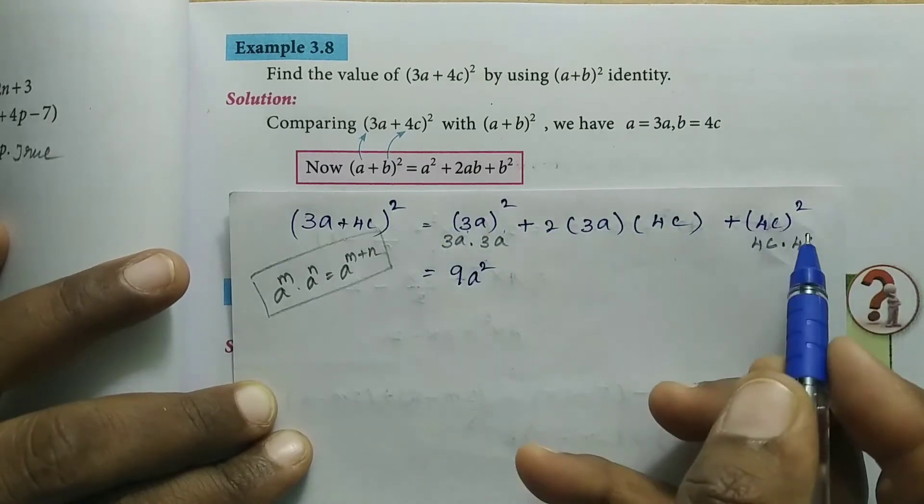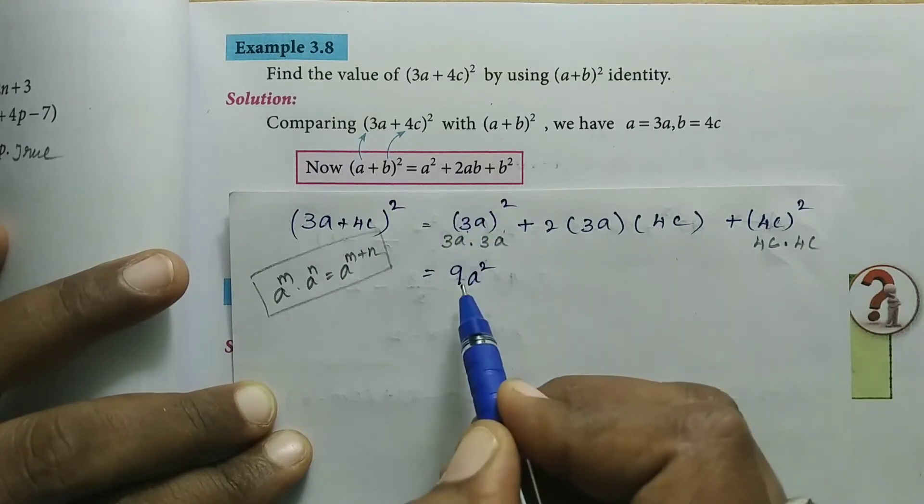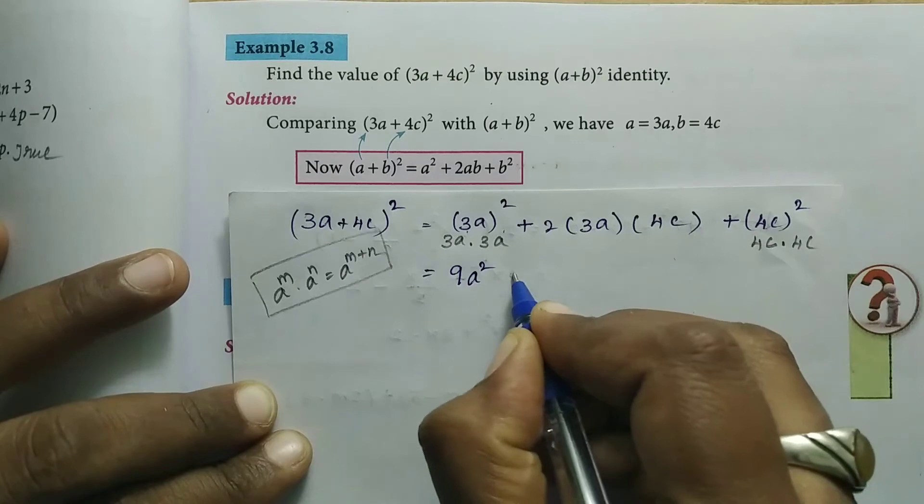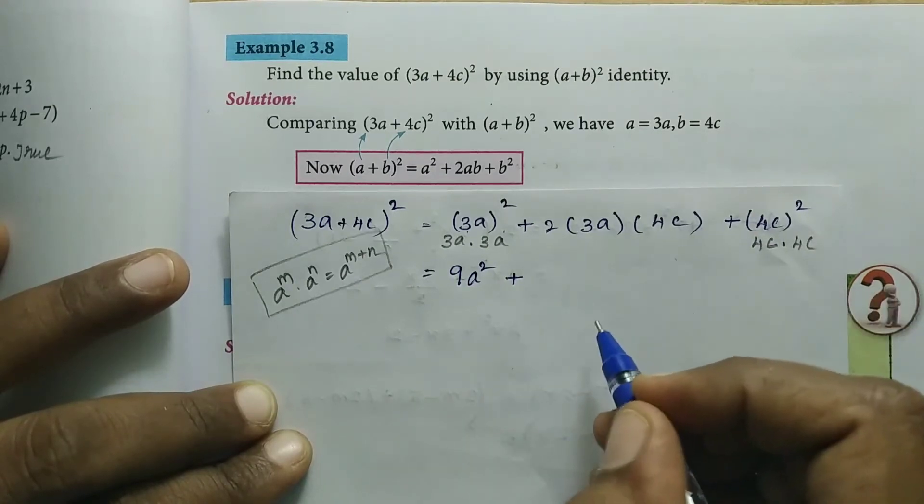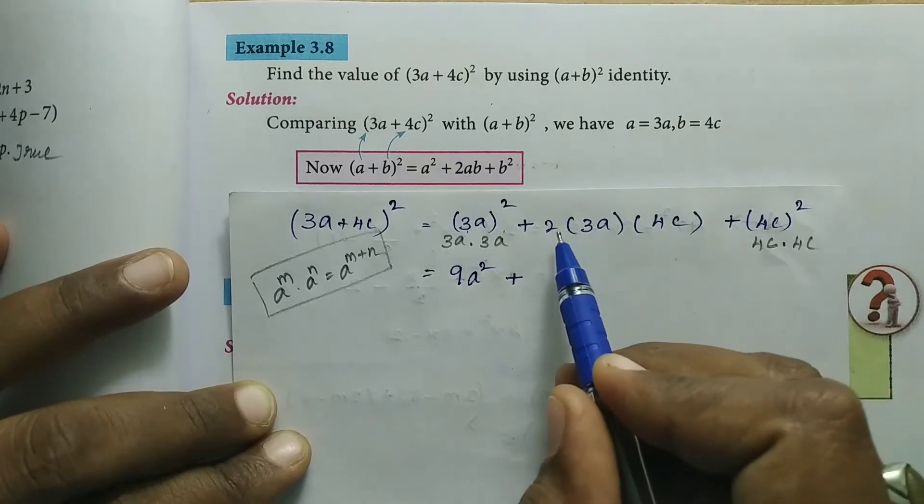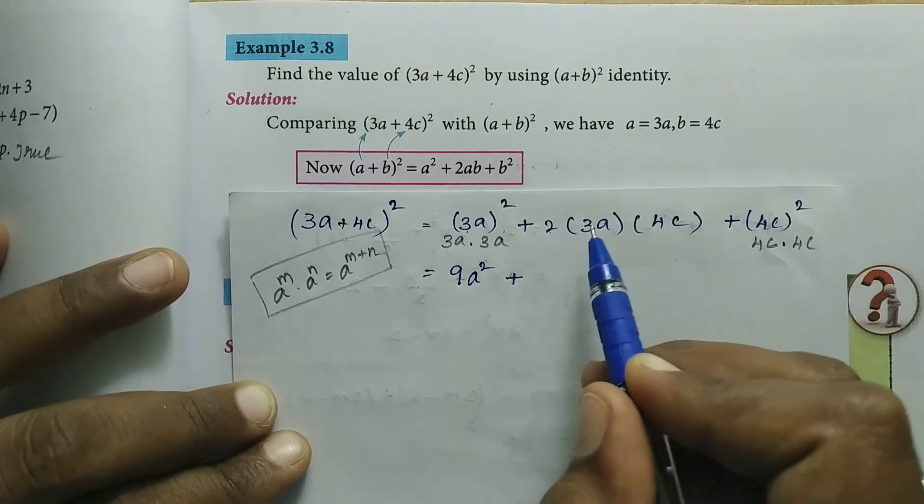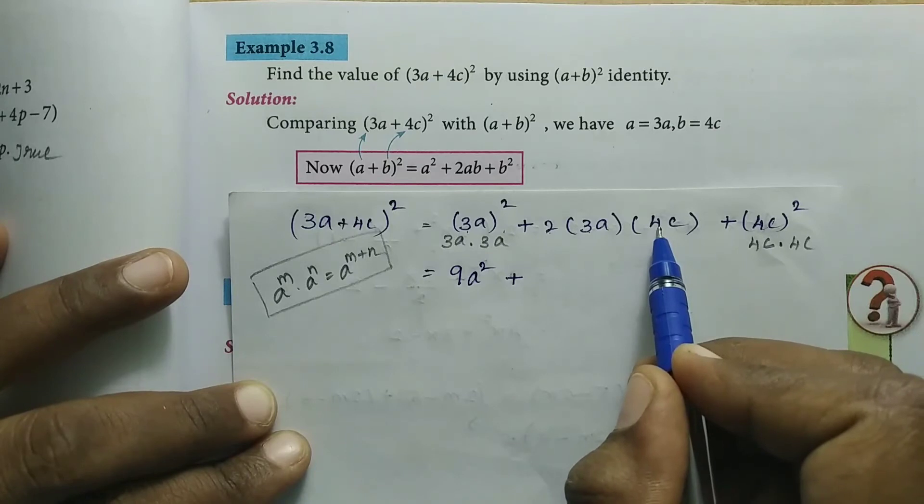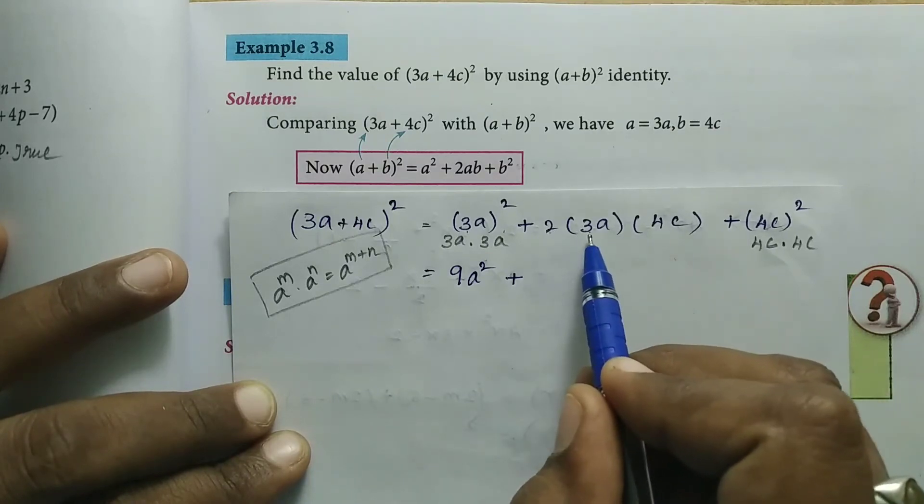The first term answer is 9a². Plus, for the second term, multiply the numbers first: 2 × 3 × 4.